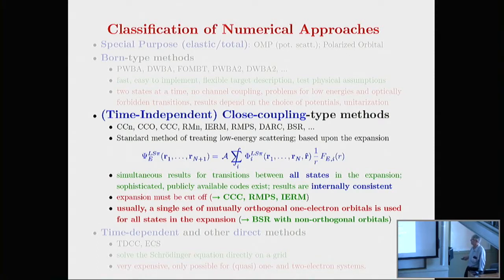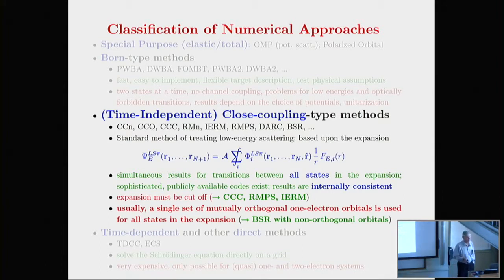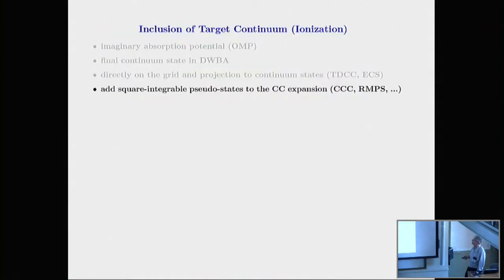Usually people use mutually orthogonal one-electron orbitals to construct all these states. It turns out that this B-spline R-matrix method is addressing some of the issues that come with that. It is convenient, but also a somewhat limiting factor in some cases. In terms of how we include the target in the continuum, we add square-integrable pseudo-states to the close-coupling expansion.